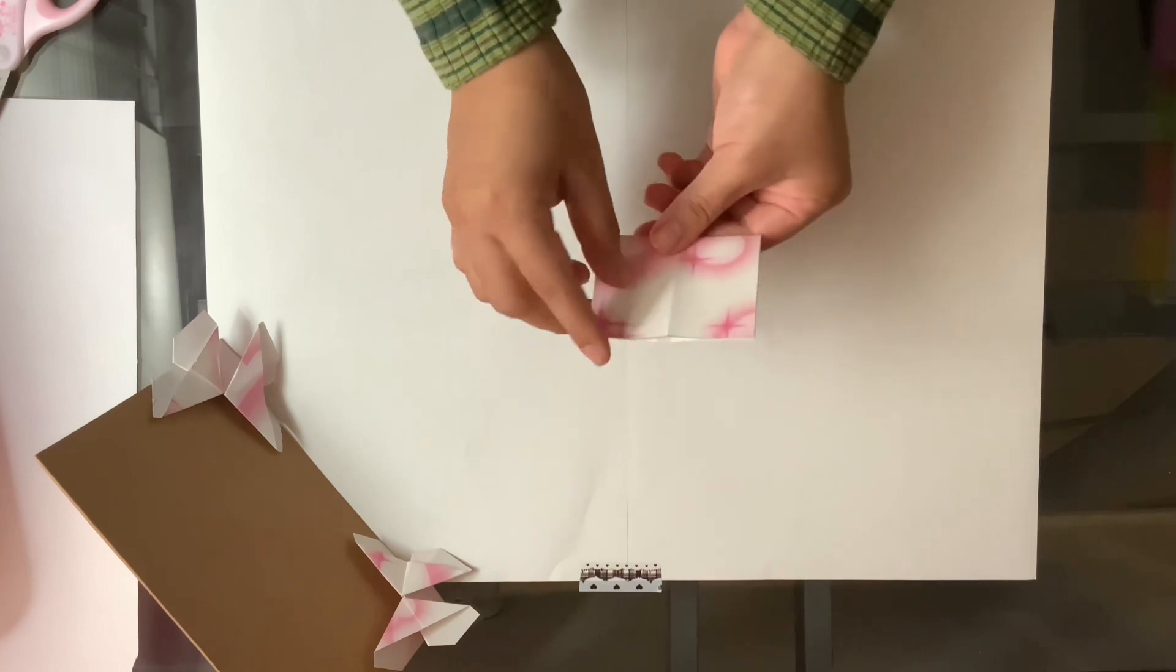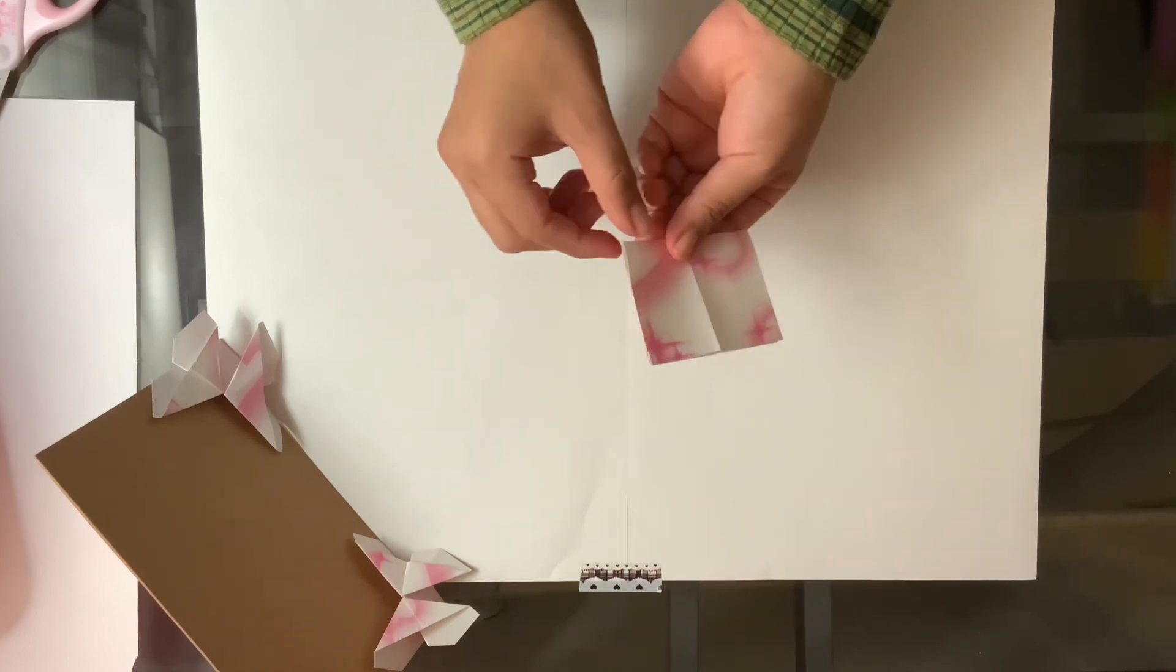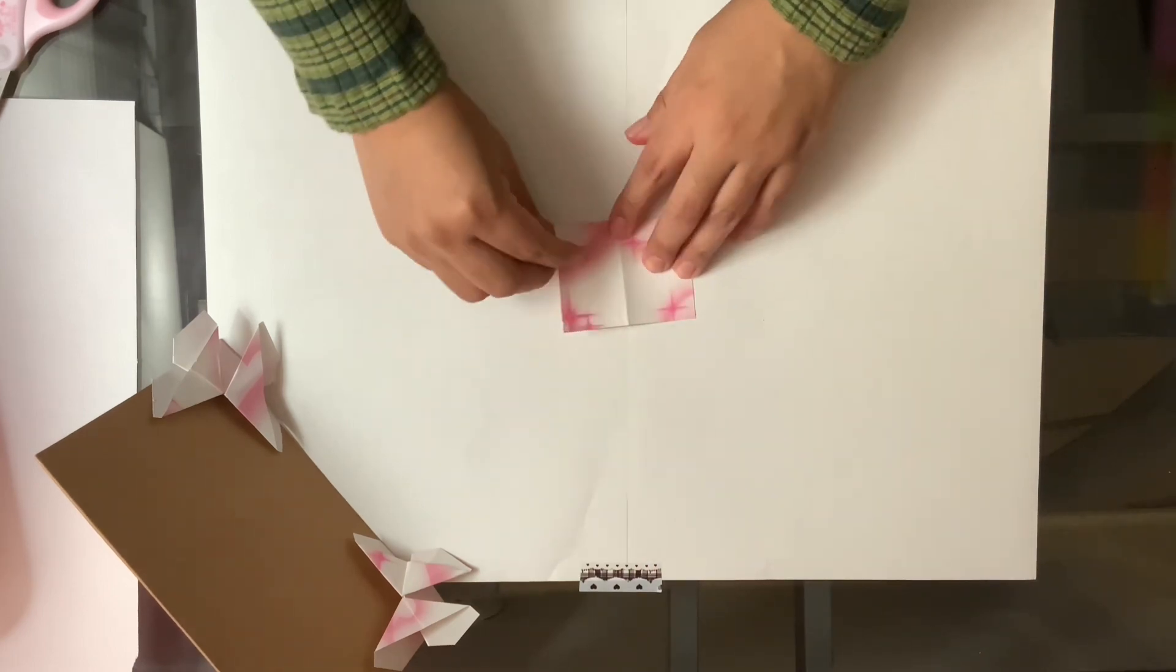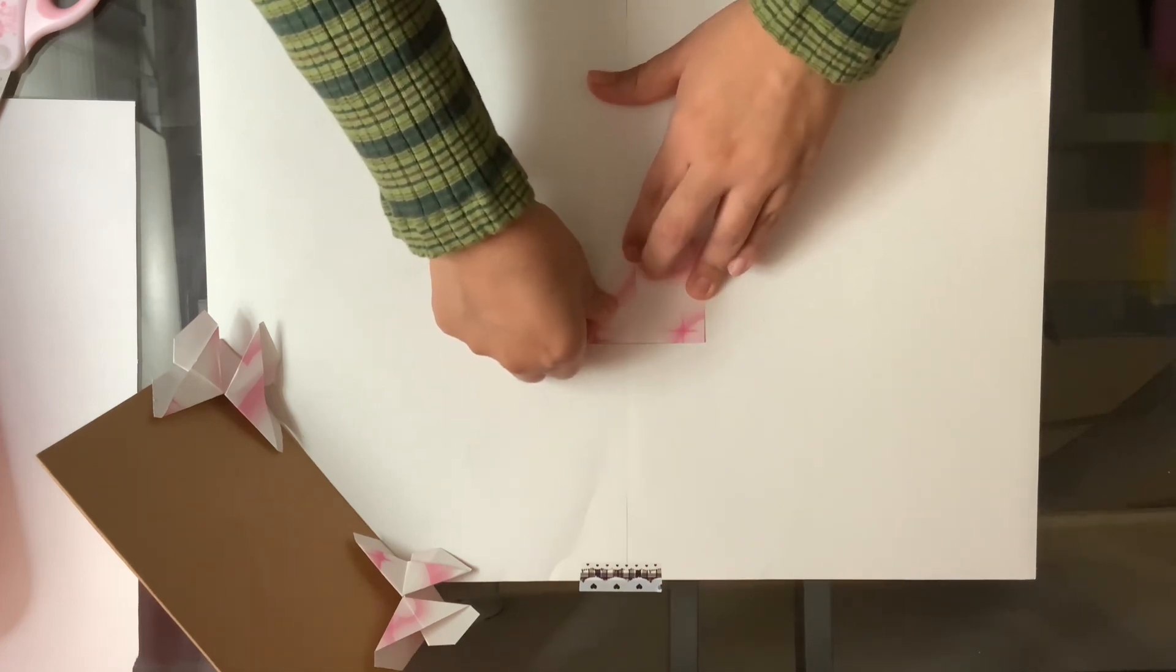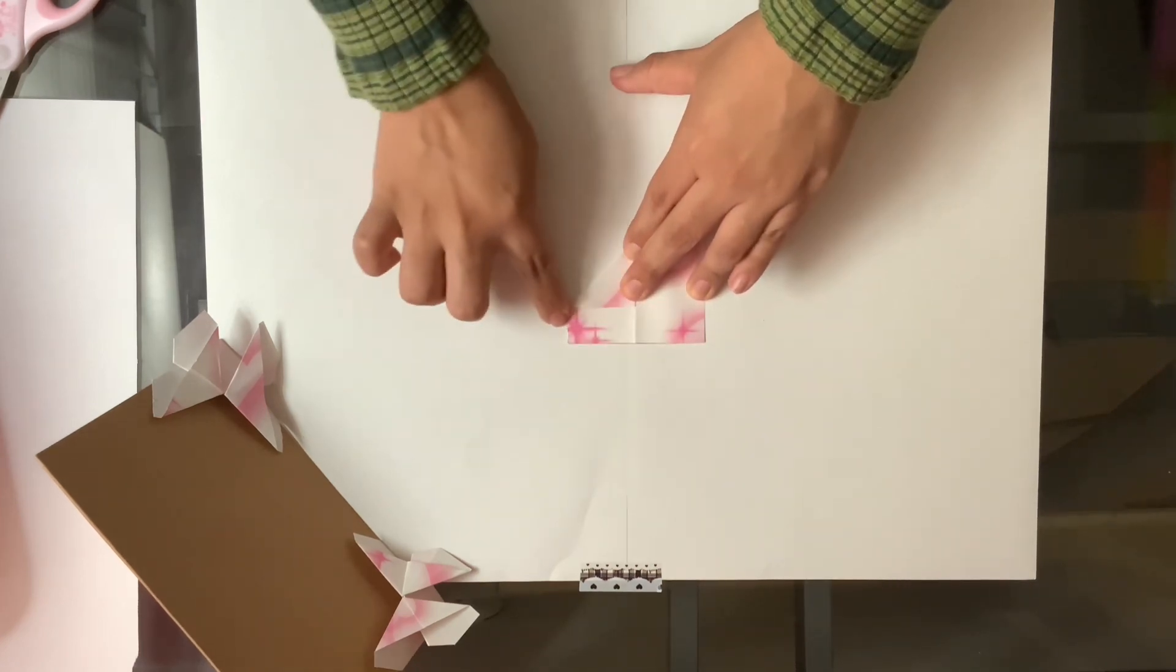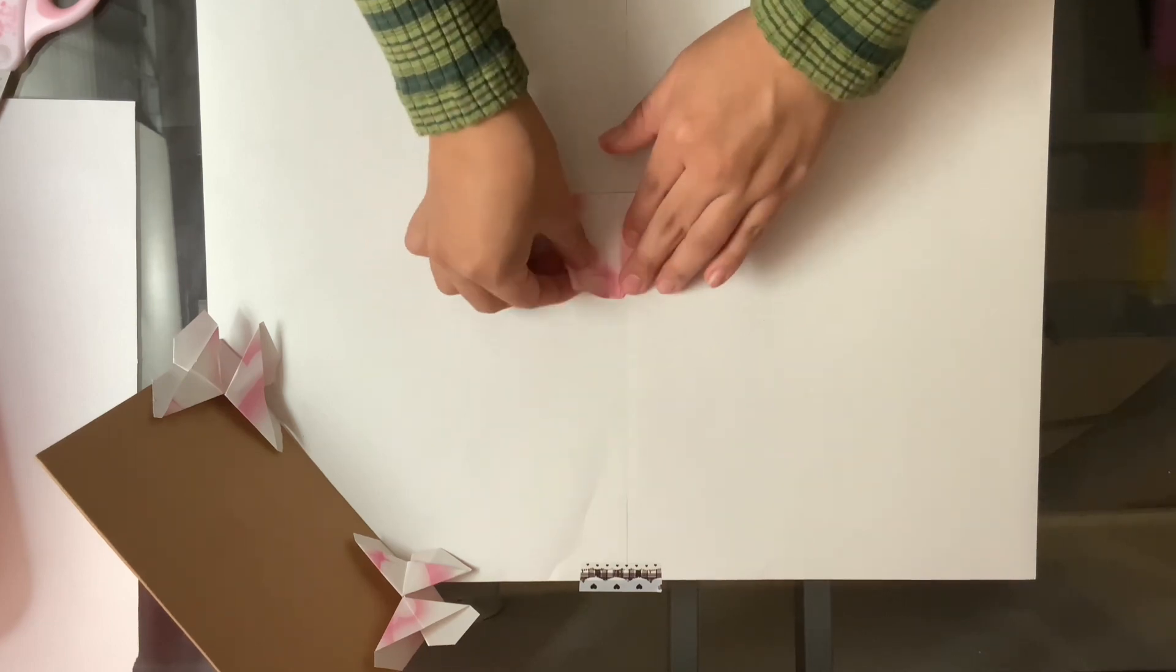For this next step, you're going to want to fold the side that is closed, not the side that is open. You're going to fold the two corners and make them line up in the middle. There's a crease from one of the first folds, so you can use that as a guide.